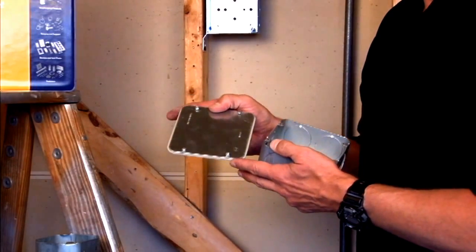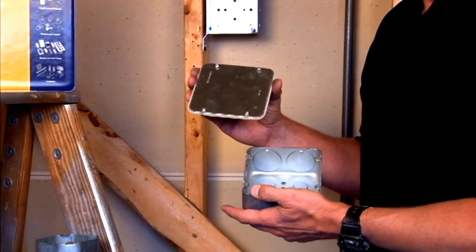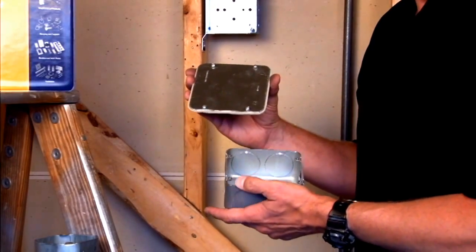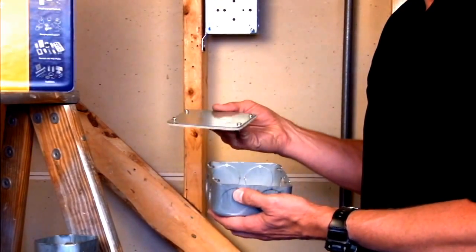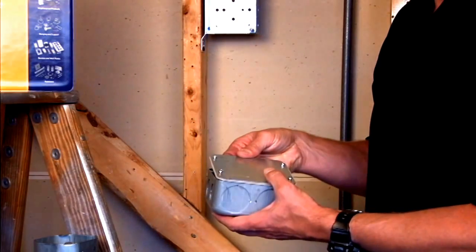This blank cover is used in plenum air spaces for Chicago plenum boxes. It simply attaches by using the screws directly to the plenum box.